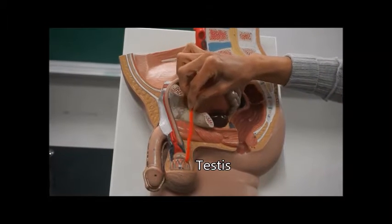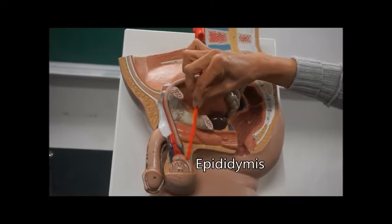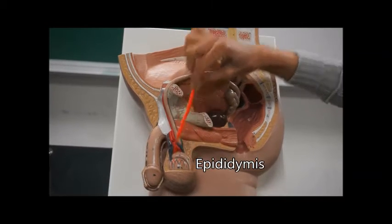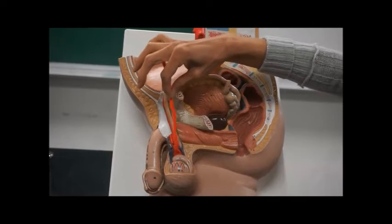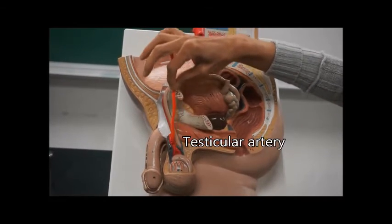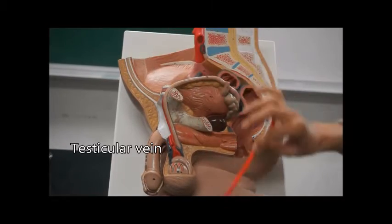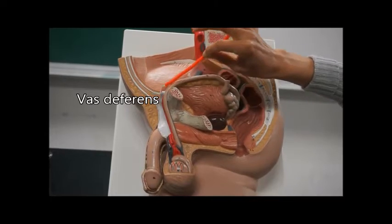This is the testis right here. This part, this is the epididymis. These are testicular blood vessels—the red is testicular artery, the blue is testicular vein. This is part of the vas deferens.